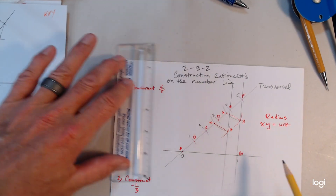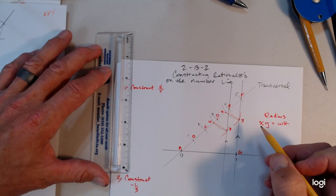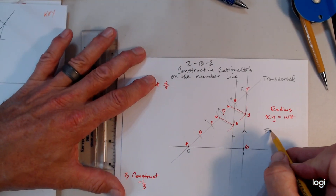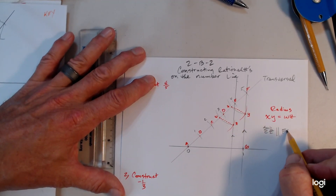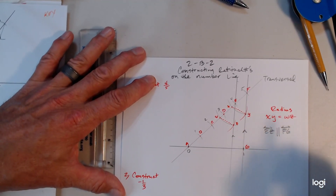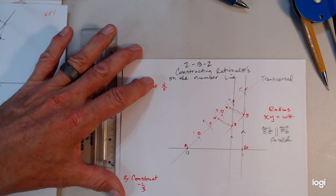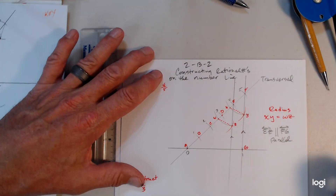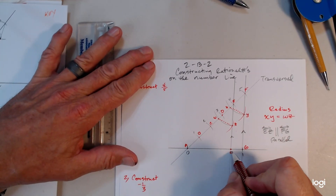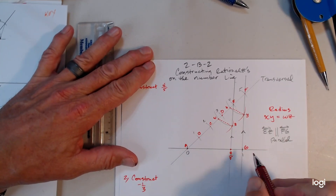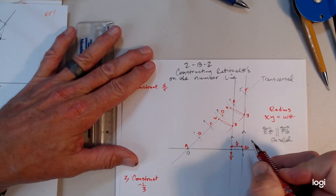These two lines — EZ and FG — have to be parallel. So line EZ is parallel to FG. Just a little geometry right there — that symbol means parallel. So let's label our result: it hit the number line right here. This is four-fifths. The distance from four-fifths to one is obviously one-fifth.